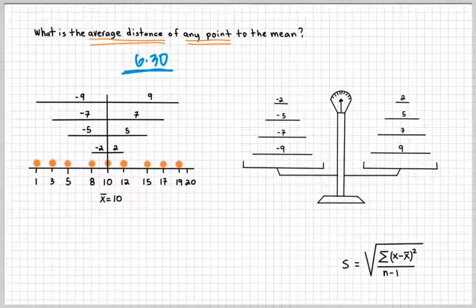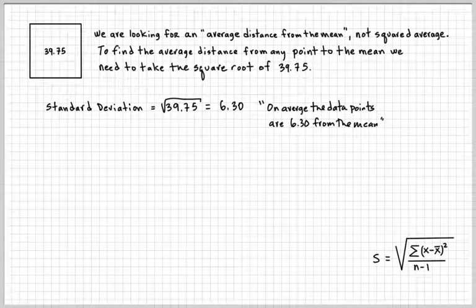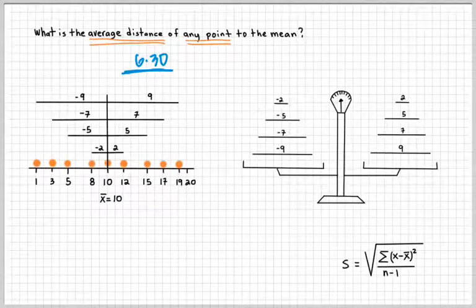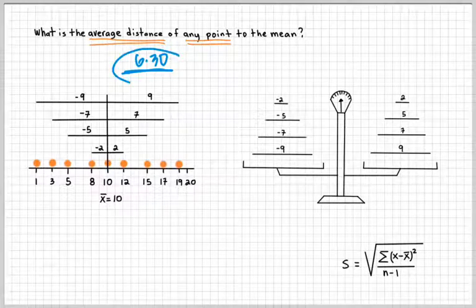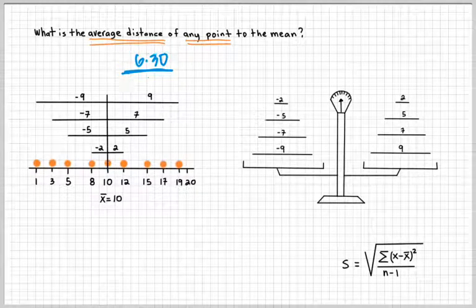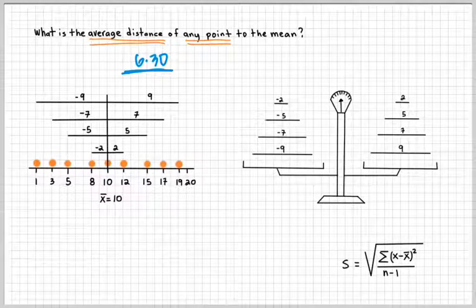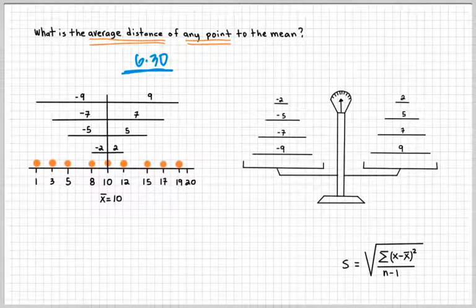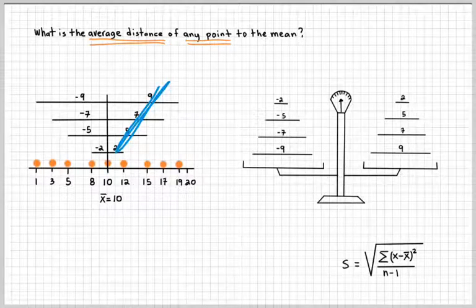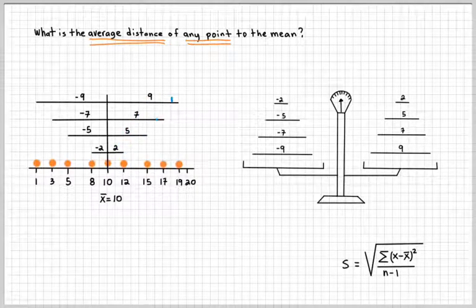I think that was the answer, 6.30. There is a line 6.30. That's the average distance of these data points. And, of course, there's more meaning to that, because you just can't add these numbers and divide by 1, 2, 3, 4 and get the same answer.